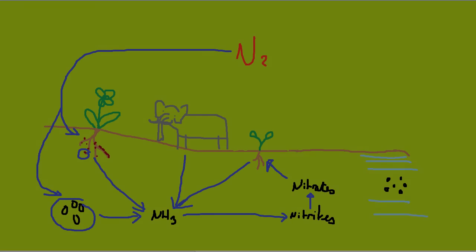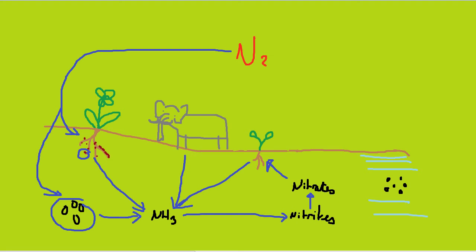This is generally favourable in ploughed fields with non-waterlogged soil. The last stage is denitrification, where nitrates are removed from the soil. This is done by denitrifying bacteria, which are anaerobic bacteria, so they suit waterlogged conditions such as you would find in a flooded field — and this essentially releases nitrogen back into the atmosphere.